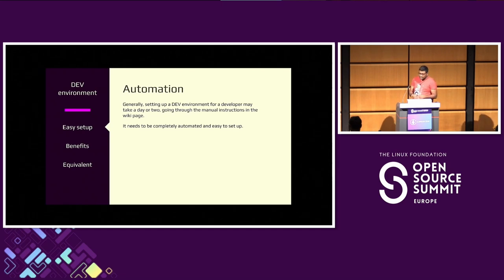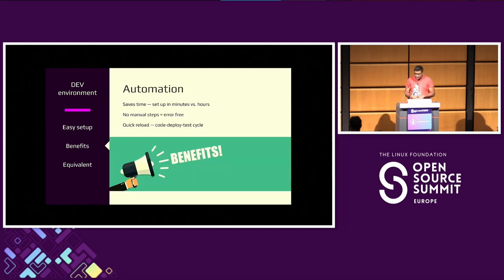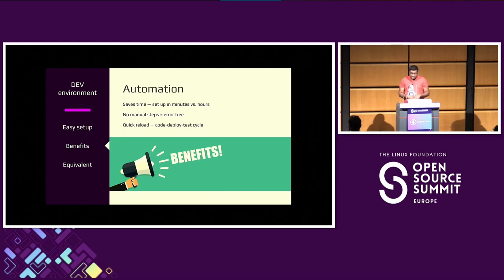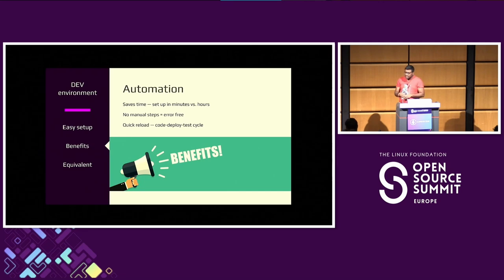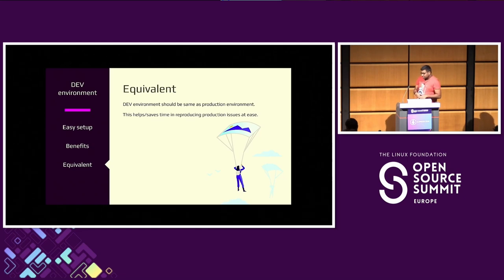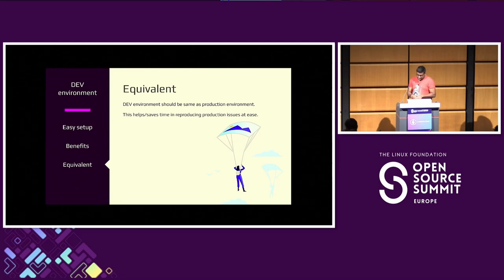Following manual instructions is a pain unless you have automation around it. Without automation it might take hours or days to set up an environment, but with automation it can be done in minutes — no manual steps, which means error-free and quick reload. If I'm working on a feature, I'd like to test and deploy it locally with a quick reload cycle. And if a developer is reported with a production issue, how can they reproduce it on their local environment as quickly as possible? Unless you do that, you won't be able to fix the issue.